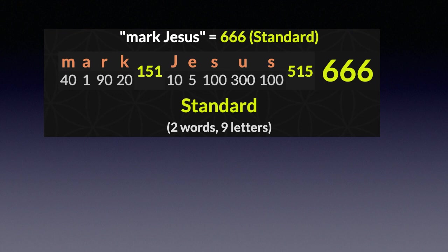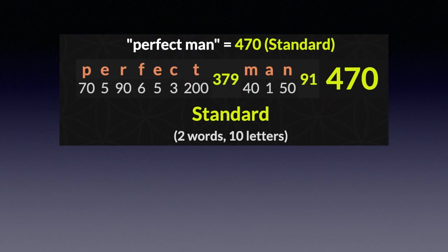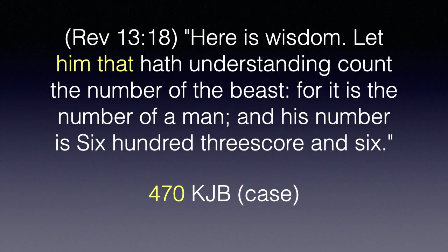I will present the evidence for that in the remainder of this video. The phrase 'perfect man' has a value of 470 using the same English standard cipher. Back to Revelation 13:18: 'Here is wisdom, let him that hath understanding count the number of the beast, for it is the number of a man.' I am saying that that man is Jesus Christ. I know it's controversial, and we'll see the connection with 666 in detail as we proceed.